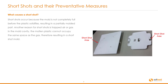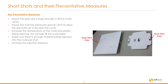Let's have a look at the problem with short shots. Short shots occur because the mold is not completely full before the plastic solidifies, resulting in a partially molded part. Another reason for short shots is trapped air or gas in the mold cavity — the molten plastic cannot occupy the same space as the gas, therefore resulting in a short shot mold. Key preventative measures: ensure the gate size is large enough to fill the mold cavity; ensure the tool has adequate gas or air vents to allow gas build-up to escape the cavity; increase the temperature of the mold and plastic being injected; make sure there is enough material being injected into the mold per shot; and increase the injection pressure.